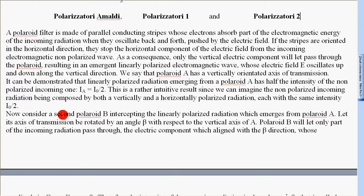Now consider a second polaroid B intercepting the linearly polarized radiation which emerges from polaroid A. Let its axis of transmission be rotated by an angle β with respect to the vertical axis of A. Polaroid B will let only part of the incoming radiation pass through, just the electric component which is aligned with the β direction.